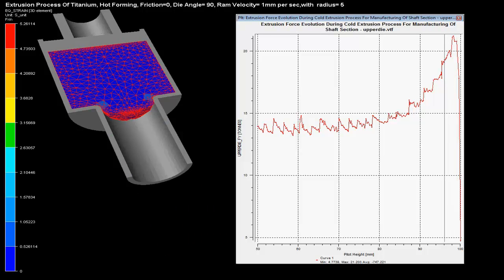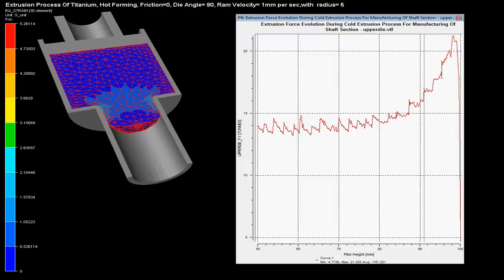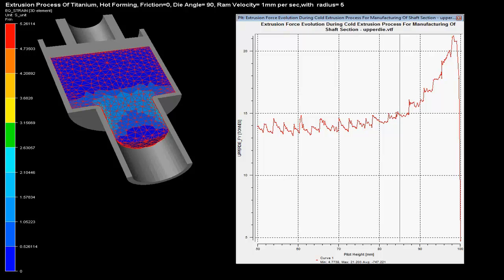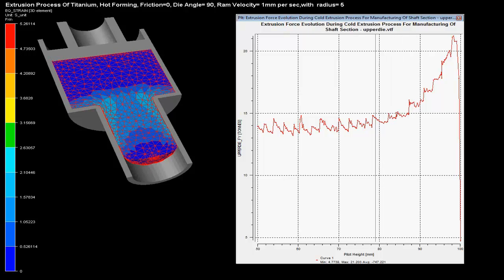In this video, you can see the extrusion process of aluminum solid shaft with 50% reduction in diameter of the billet.